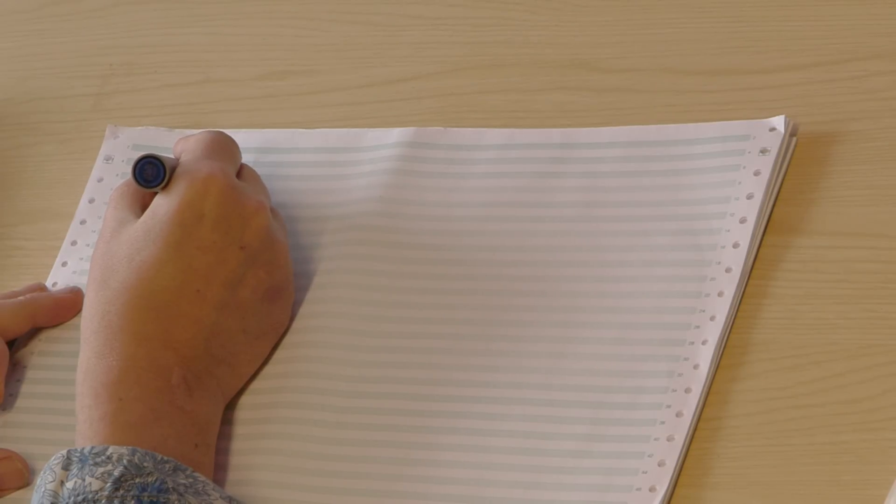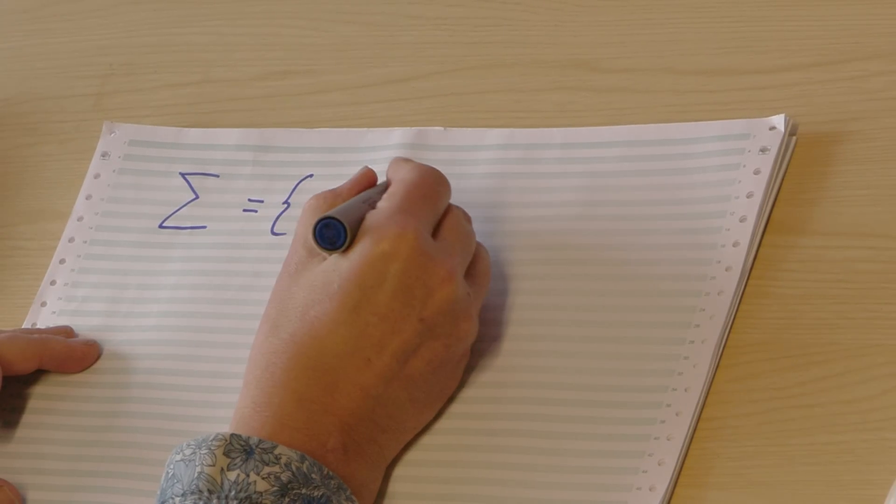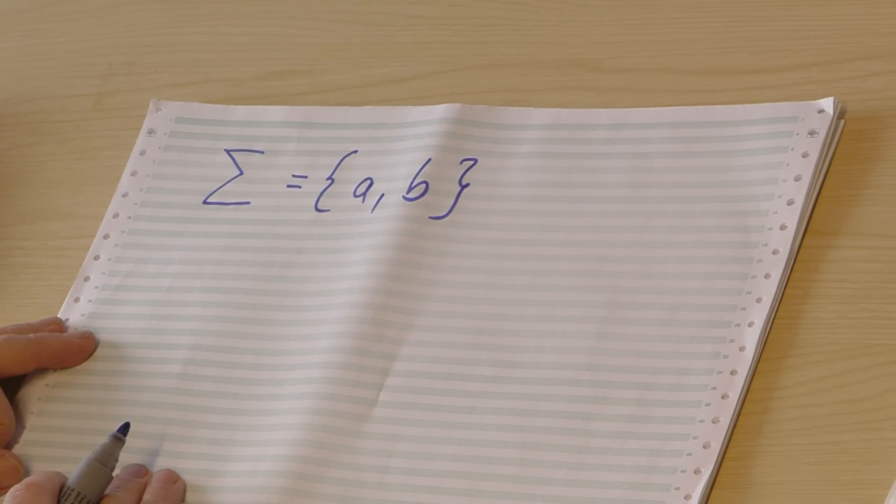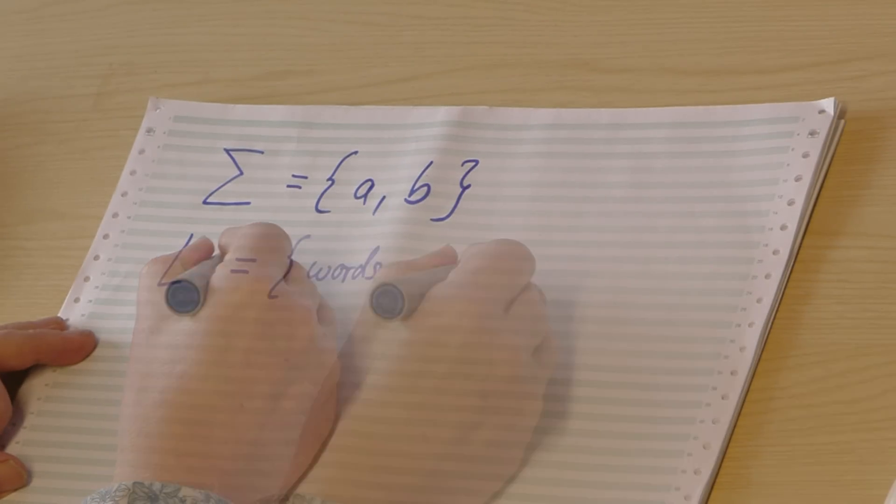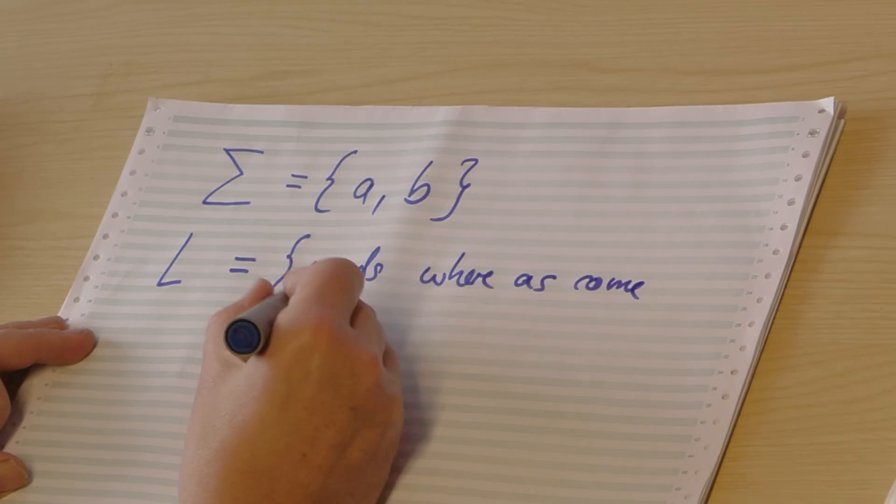That's very good for examples. So let's start with an alphabet, sigma. If you do some math we need to have some Greek letters, that already shows math is coming. Let's just say we have a and b as our symbols, and our language is a set of words - all the words where a's come before b's. Very simple language.